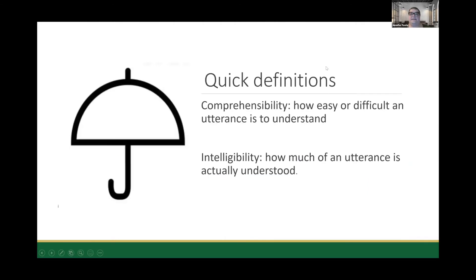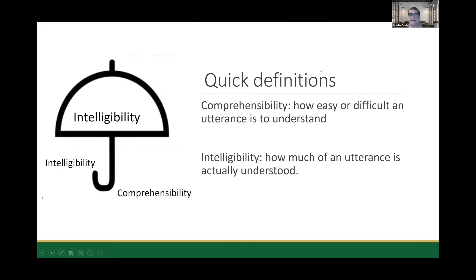Just a couple of quick definitions to make sure we're all on the same page, because I use the terms comprehensibility and intelligibility. In research terms, comprehensibility refers to how easy or difficult an utterance is to understand — would you say it took no effort or was very effortful? Intelligibility is how much of the utterance you actually understood — could you have written it down? When we're talking about the intelligibility approach, we tend to use intelligibility as an umbrella term that generally means understanding, and it can include both intelligibility as a research construct and comprehensibility.